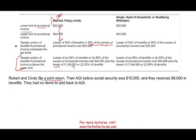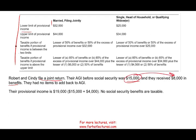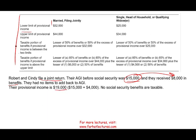Robert and Cindy file a joint return. Their AGI before social security is $15,000, and they received $8,000 of social security benefit. They had no items to add back. First, compute their provisional income: AGI plus 50% of social security, so $15,000 plus $4,000 equals $19,000. Since $19,000 is below $32,000, no social security benefit is taxable.